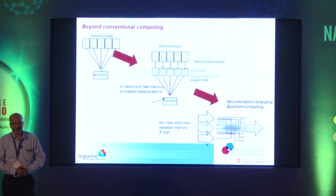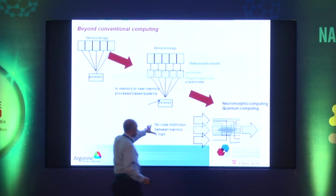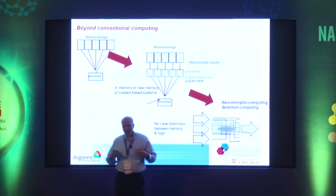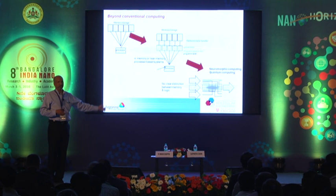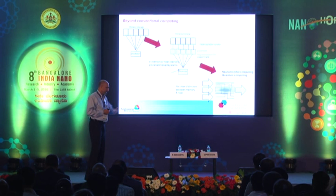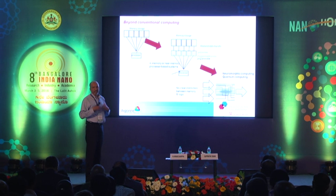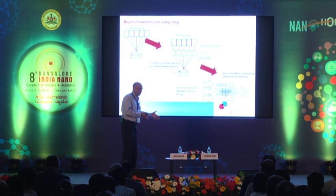The first step is to place memory close to the processor. You can do what is called in-memory compute. If you push this even further so that there is no distinction between memory and logic, then you have non-Von Neumann computing, where your computation happens in parallel as a result of the interaction between different signal processing paths. There are two things people are excited about: quantum computing, which I will not talk about today, and what is called loosely neuromorphic computing — biologically inspired computing.